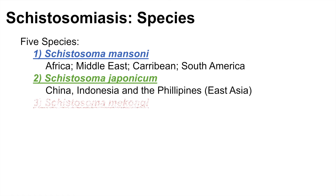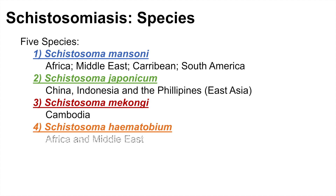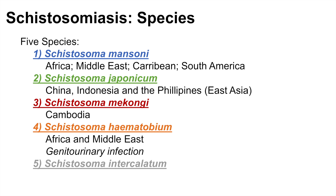Another species is known as schistosoma mekongi, and this species is found in Cambodia. Another species is schistosoma haematobium, found in Africa and the Middle East, and this one in particular is involved in genitourinary infection. And the last one is schistosoma intercalatum, found in the Congo, Gabon, and Cameroon.